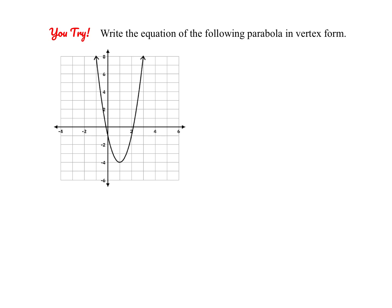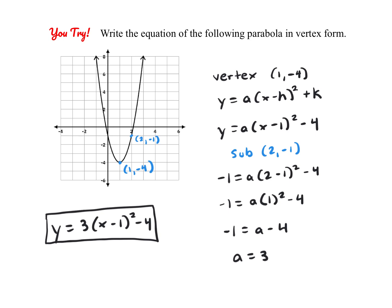Alright, I have one last problem for you to try on your own, so please pause the video. Go ahead and check your work. The vertex is (1, -4), so h is 1 and k is -4, giving y equals a times (x minus 1) squared minus 4. Substituting the point (2, -1) to solve for a gives this same function. You could also have used the point (0, -1) and gotten the same a value. Alright, that is all for today's video — thank you so much for watching.